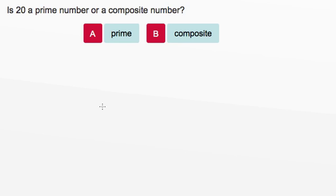We need to figure out if 20 is a prime number or a composite number. So remember, a prime number is any number that only has two factors, one and itself. A composite number is any number that can be divided evenly by numbers other than one and itself, or it has factors other than one and itself.